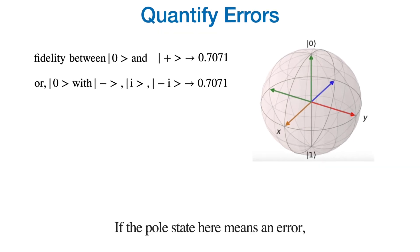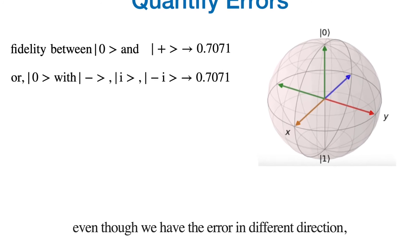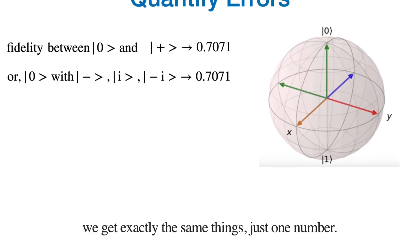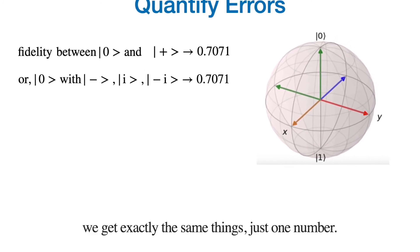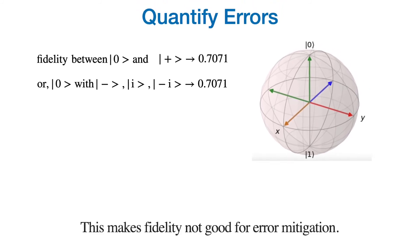If the Pauli state here means an error, even though we have the error in different direction, we get exactly the same thing. Just one number. This makes fidelity not good for error mitigation.